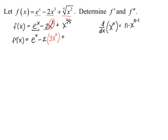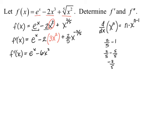Then for our last term, x to the two-fifths power, we use the power rule as well. The exponent two-fifths comes in front, and then we subtract one — just be careful with your fractions. Remember, two-fifths minus one is really two-fifths minus five-fifths, which leaves us with negative three-fifths for the exponent. Simplifying, our first derivative is e to the x minus six x squared plus two-fifths x to the negative three-fifths power.